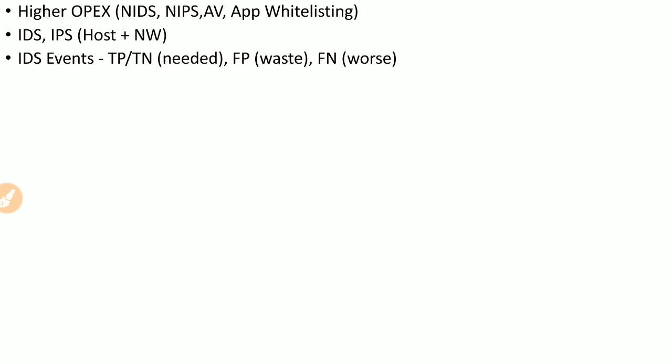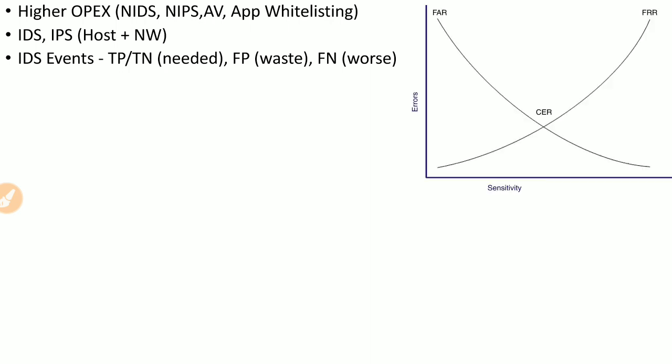False positive and false negative mean the IDS is wrong about the occurrence of a security breach. Ideally, we need only true positives and true negatives — no false positives and no false negatives. False positives waste resources investigating false alerts, and false negatives are the worst-case scenario because the IDS falsely reports nothing happened while hackers may be actively breaching the organization.